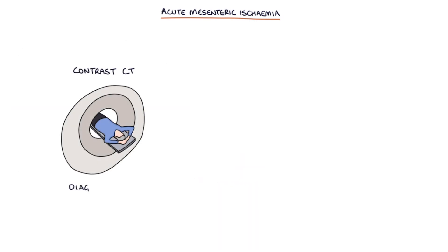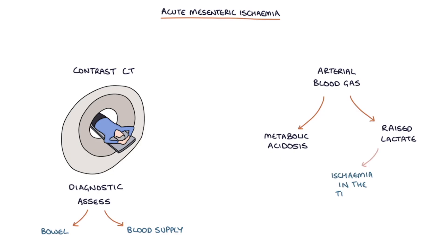A contrast CT is the diagnostic test of choice allowing the radiologist to assess the bowel and the blood supply. When you do an arterial blood gas the patient will have a metabolic acidosis with a raised lactate level and this is due to ischemia in the tissue and ischemia leads to anaerobic respiration and the production of lactate.